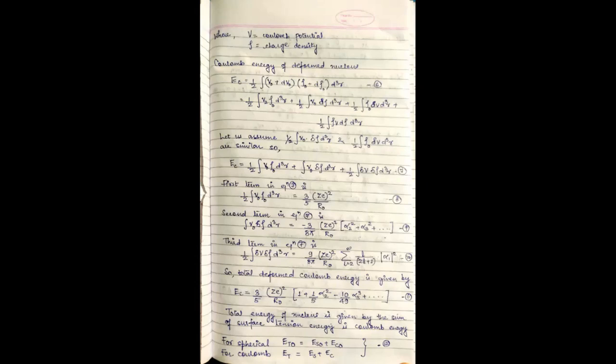The first term in equation 7 is 1 by 2 integral V naught rho naught d cube R which equals 3 by 5 Z whole square upon R. The second term in equation 7 is V naught integral V naught del rho d cube R equals minus 3 by 8 pi Z whole square upon R naught times alpha 2 square plus alpha 3 square plus O.